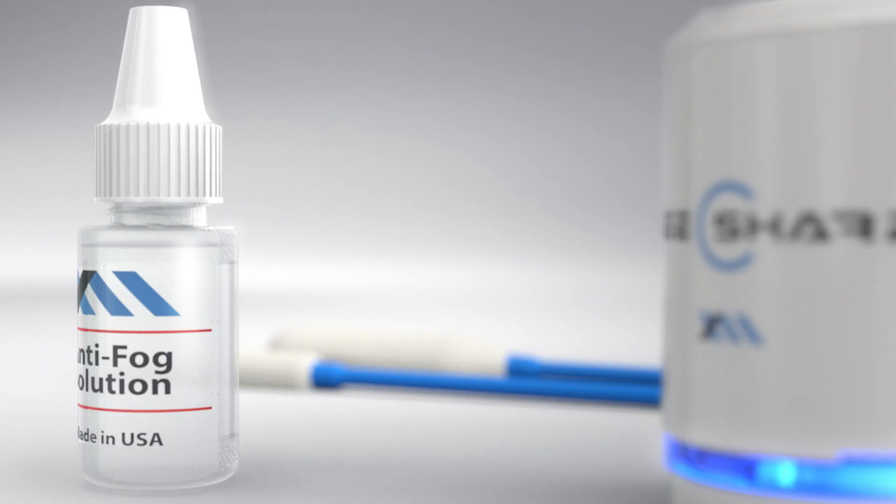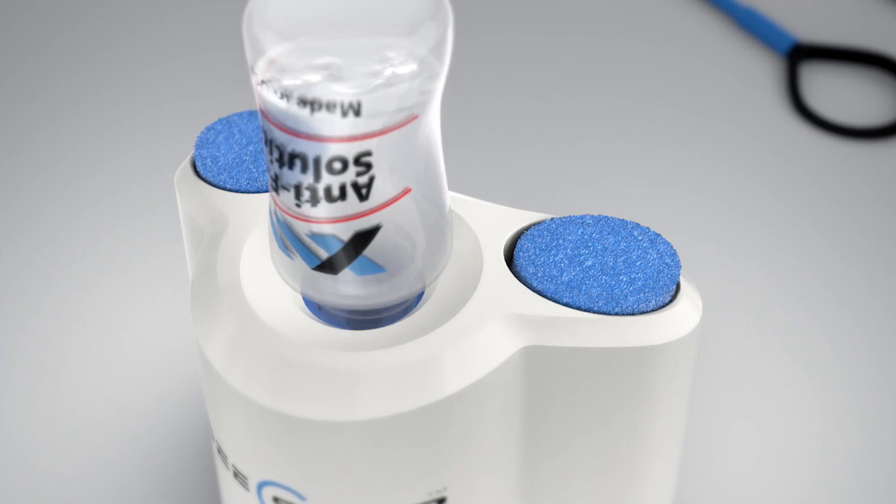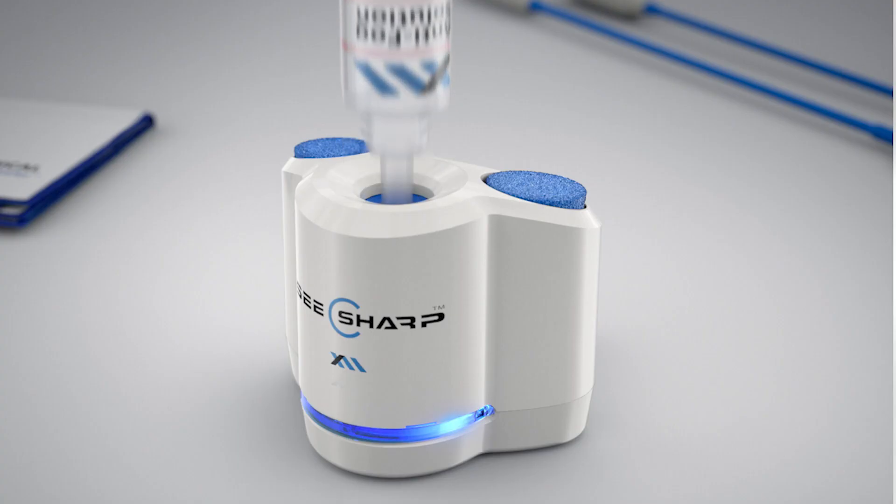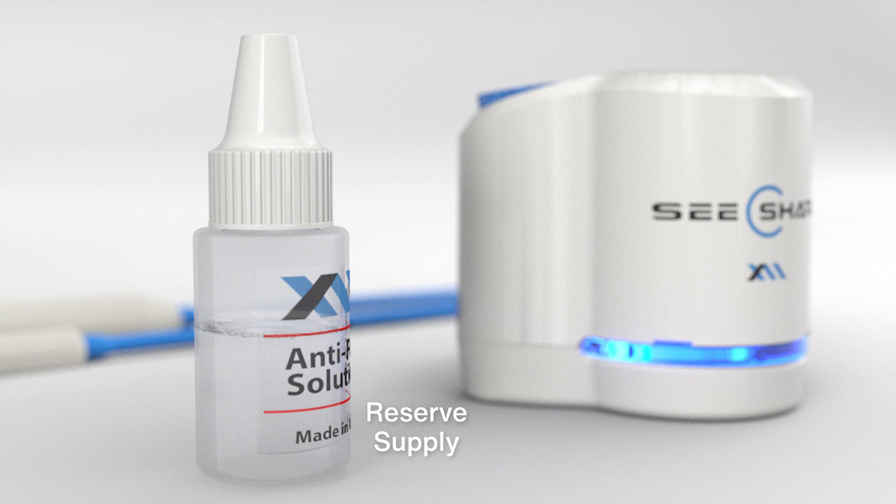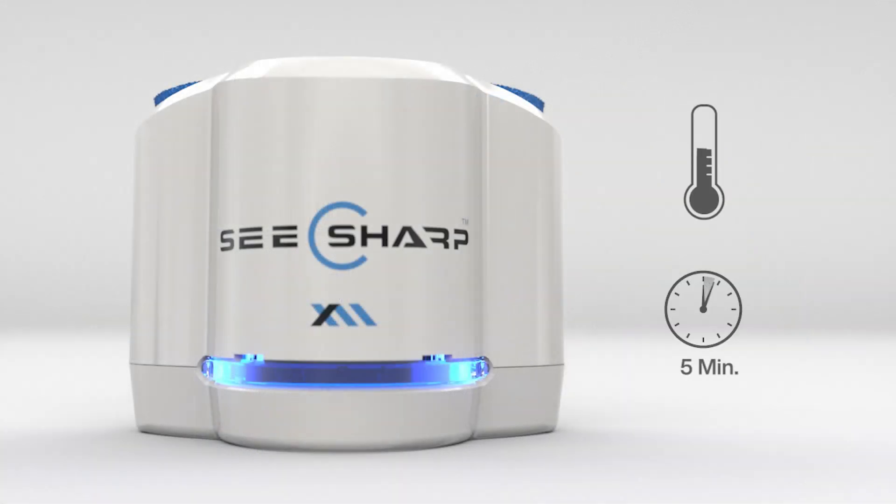Remove the lid from the anti-fog bottle and completely insert the open nib into the C-Sharp reservoir. Squeeze the sides of the anti-fog bottle, dispensing approximately one-third of the solution into the C-Sharp reservoir, as indicated by the red lines on the bottle's label. Return the lid to the bottle and store the excess solution for potential later use. Allow five minutes for the C-Sharp unit to reach optimal temperature.